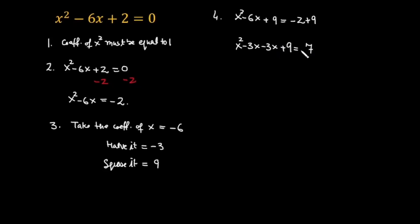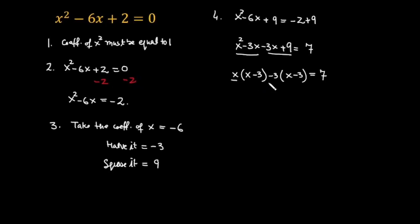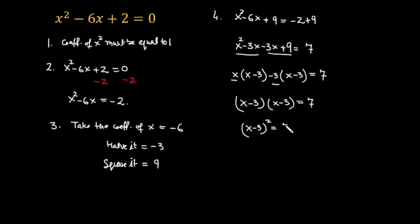This equals 7. Taking x common from the first two terms gives x(x minus 3), and the remaining factor is also (x minus 3). So from these two factors, we write one factor: (x minus 3) squared equals 7.